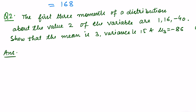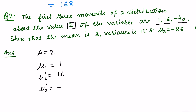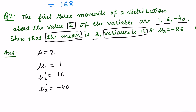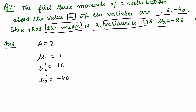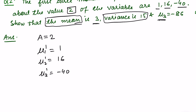The second question says the first three moments of a distribution about the value 2 — meaning our arbitrary point is 2 — are 1, 16, and minus 40. So mu 1 dash equals 1, mu 2 dash equals 16, and mu 3 dash equals minus 40. We have to find the mean, show that the variance is 15, and find the value of mu 3.